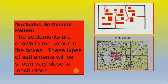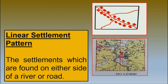The next one is linear. Linear means settlements found on either side of a river or road. You can see the road passing through, and on either side the red boxes are shown — that tells you it is a linear settlement pattern. The red boxes can be shown along the road or across the river. In the textbook you can see Dholpura, that is Dhavali, where a river is passing through and beside it the settlement pattern is there. This is called a linear settlement pattern on the topo sheet.